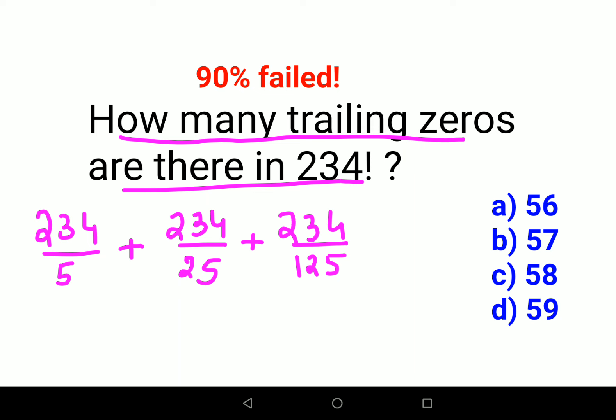So when you do 234 divided by 5, you get 46. Here we have 234 divided by 25, which is 9, because 25 times 9 gets you 225—the rest will be a decimal which we don't want. And here obviously this is 1. So your answer in this case would be 46 plus 9 plus 1, that gets you 56.